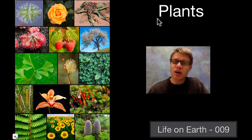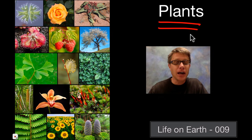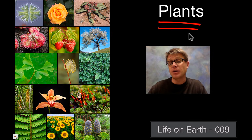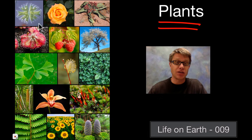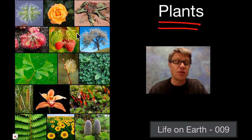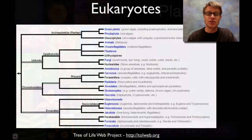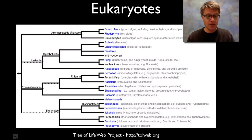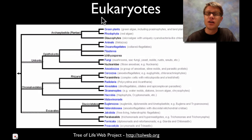Hi, it's Mr. Andersen, and in this podcast I'm going to talk about plants — more appropriately, land plants. They have a great diversity on our planet, and if it weren't for plants we literally would not be able to survive. So let's start with looking at their phylogeny.